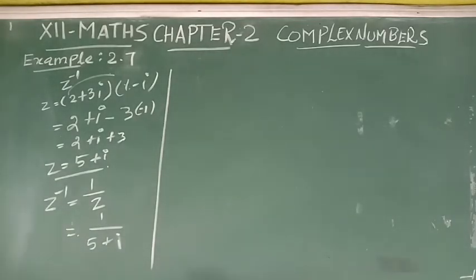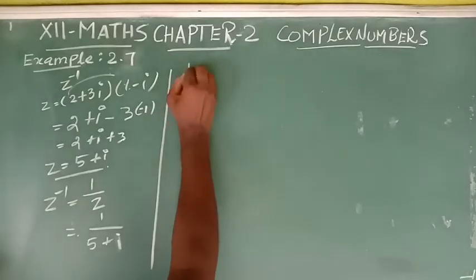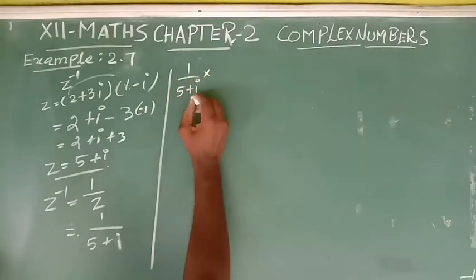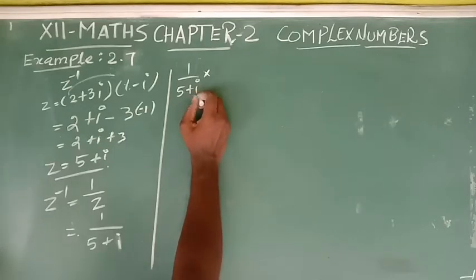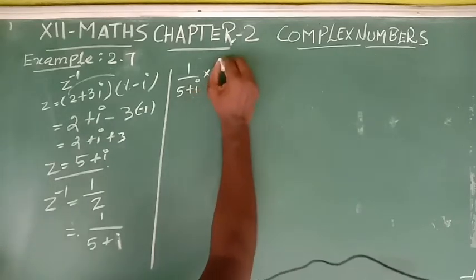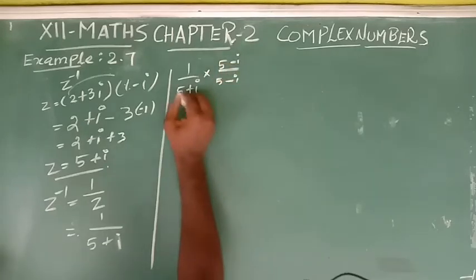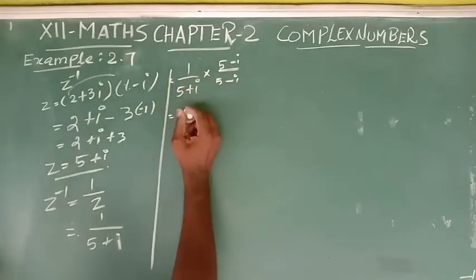The conjugate of 5 plus i is 5 minus i. So we multiply 1 by 5 plus i times 5 minus i over 5 minus i.